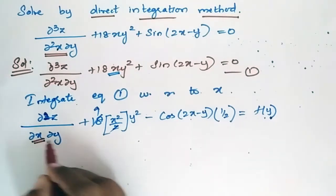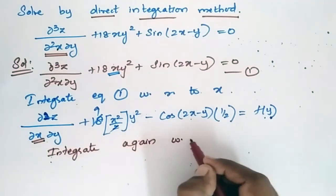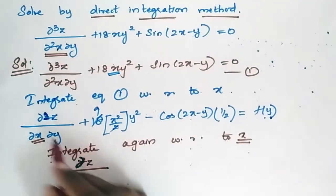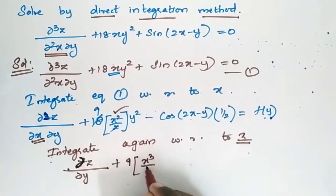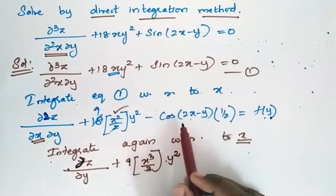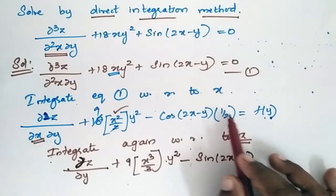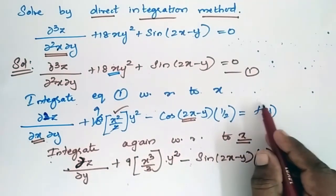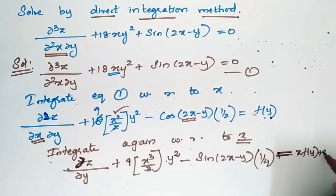In order to remove the second x-derivative, I am integrating again with respect to x. I will get ∂z/∂y + 9 · (x³/3) · y². The integration of cos is sin, so I get minus sin(2x - y) · (1/2), and again integrating gives 1/4. Plus x·f(y) equals x·f(y) + some g(y).